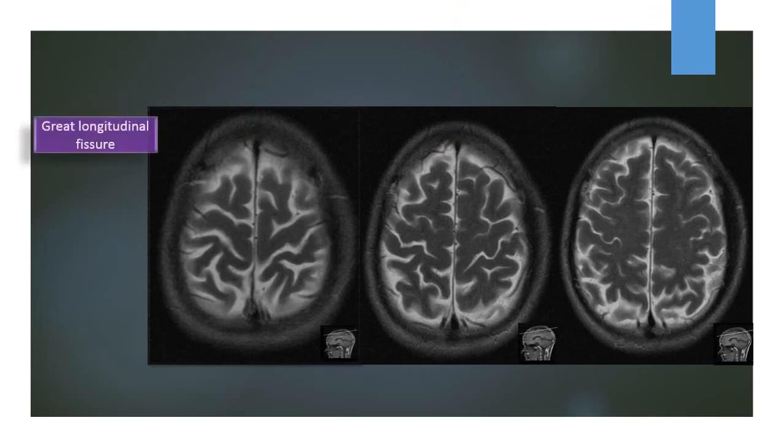This arrow indicates the great longitudinal fissure, and it is occupied by the Falx cerebri.